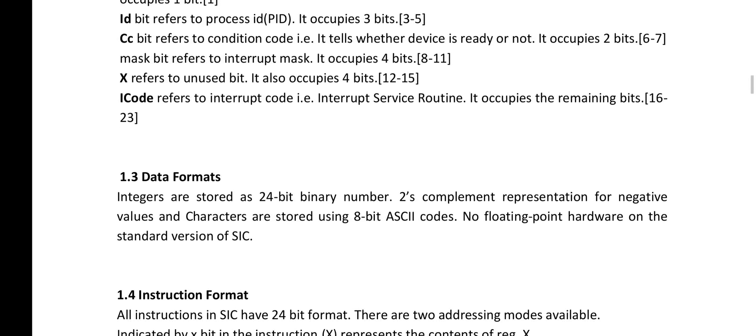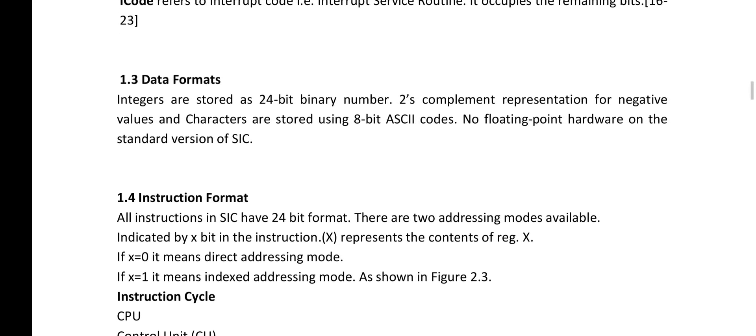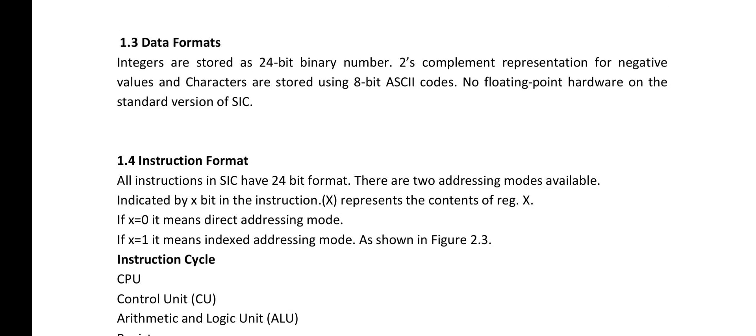The next component of the SIC architecture is the data formats. Integers are stored as 24-bit binary numbers, and 2's complement representation is used for negative values. Characters are stored using 8-bit ASCII codes. The SIC machine architecture does not support floating point on the hardware.